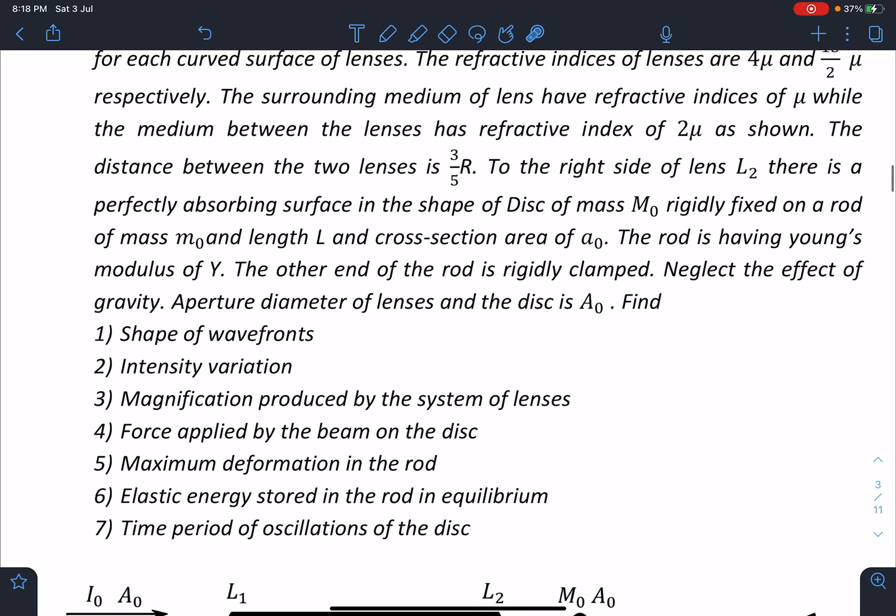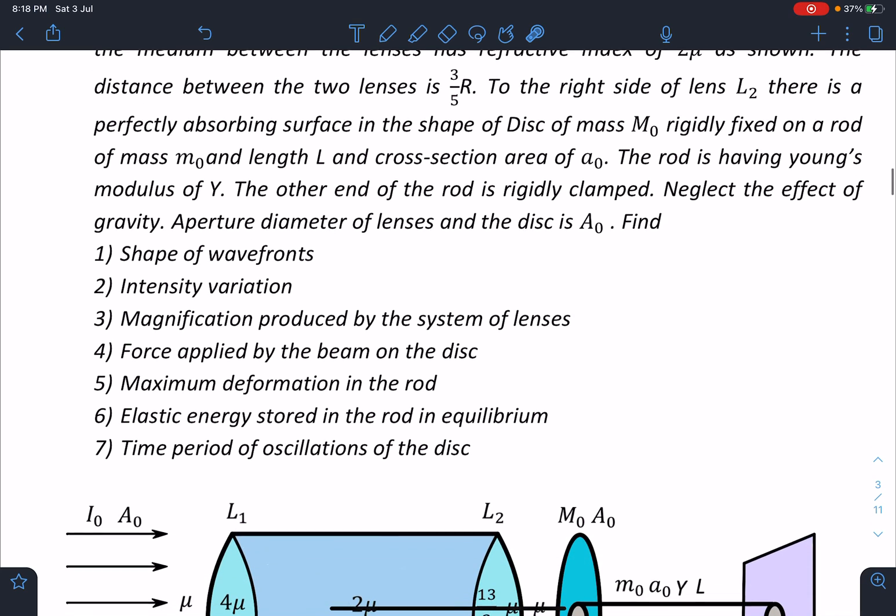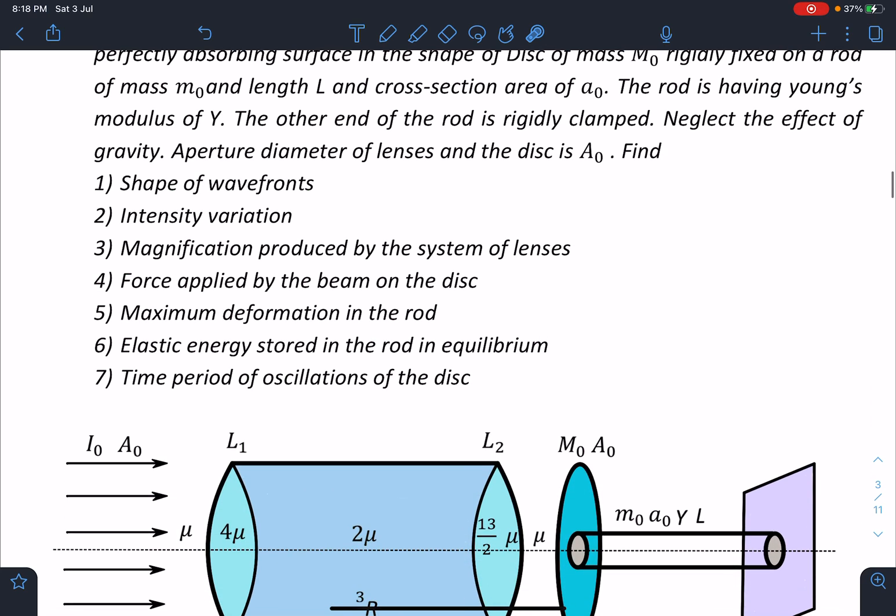Neglect the effect of gravity and aperture diameter of lenses. Find the shape of wavefronts, intensity variation, magnification produced by the lens system, force applied by the beam on the disc, maximum deformation in the rod, elastic energy stored in the rod in equilibrium, and time period of oscillation of the disc.